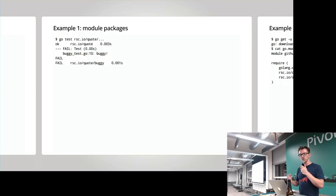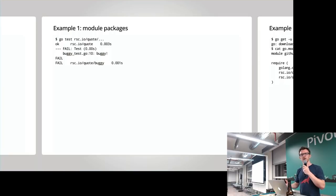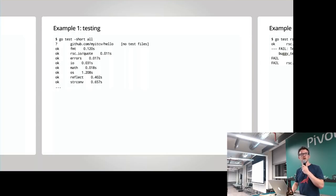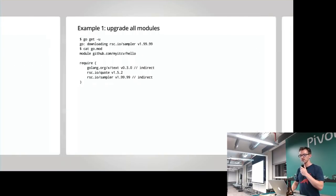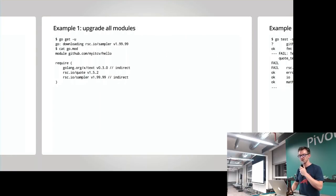All those tests actually passed. But here I'm actually specifying a slightly different set of packages to test. This comes back to the earlier point that a module is a collection of related packages, but you don't have to depend on all the packages in a module. I'm now running the tests on all the packages in the quote module, and one of them is failing — whereas the previous set of tests did not fail. It looks like there's some sort of problem with a broken package within quote.